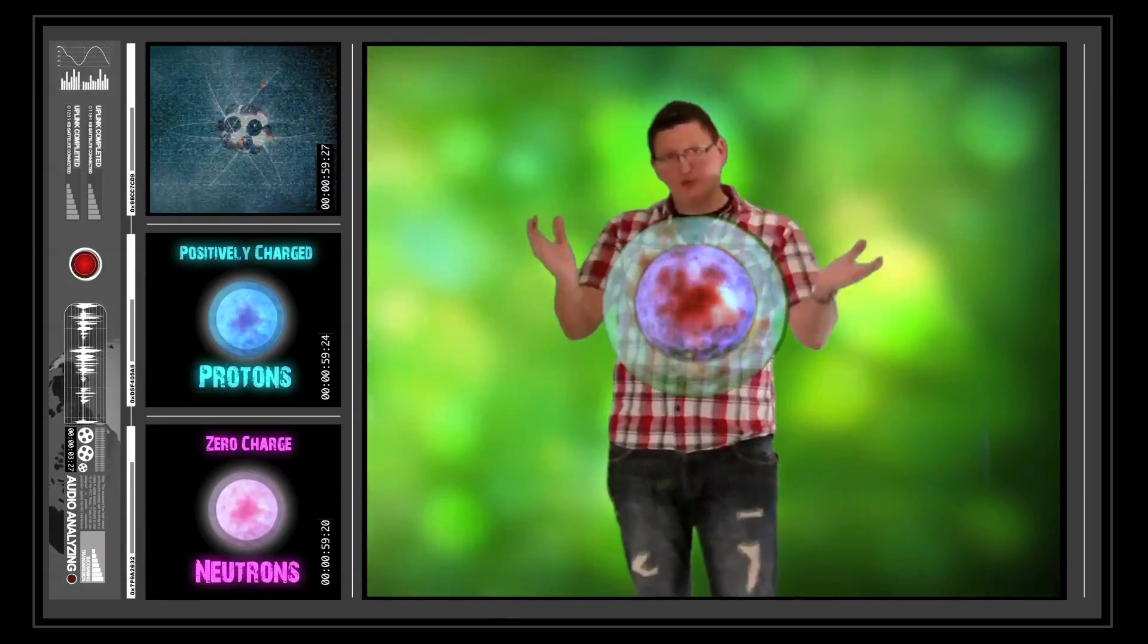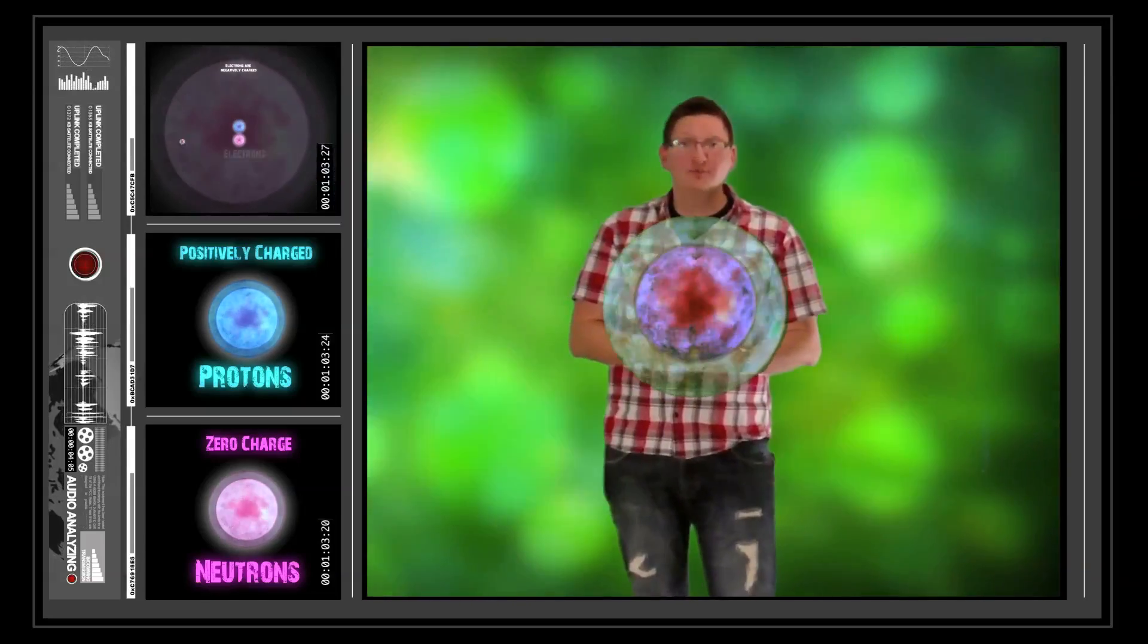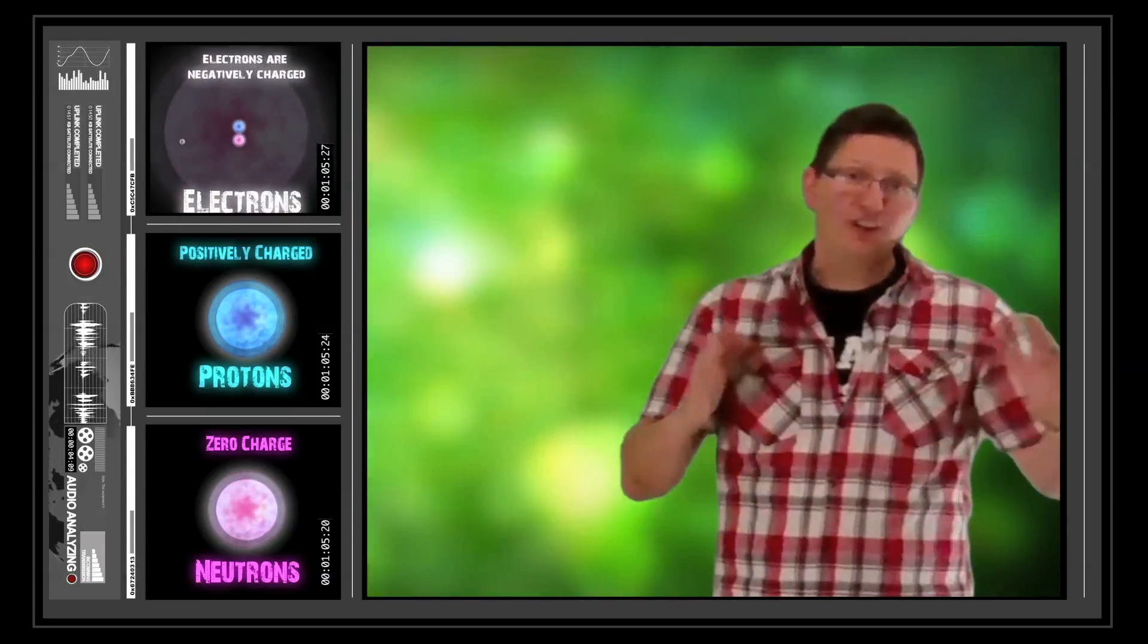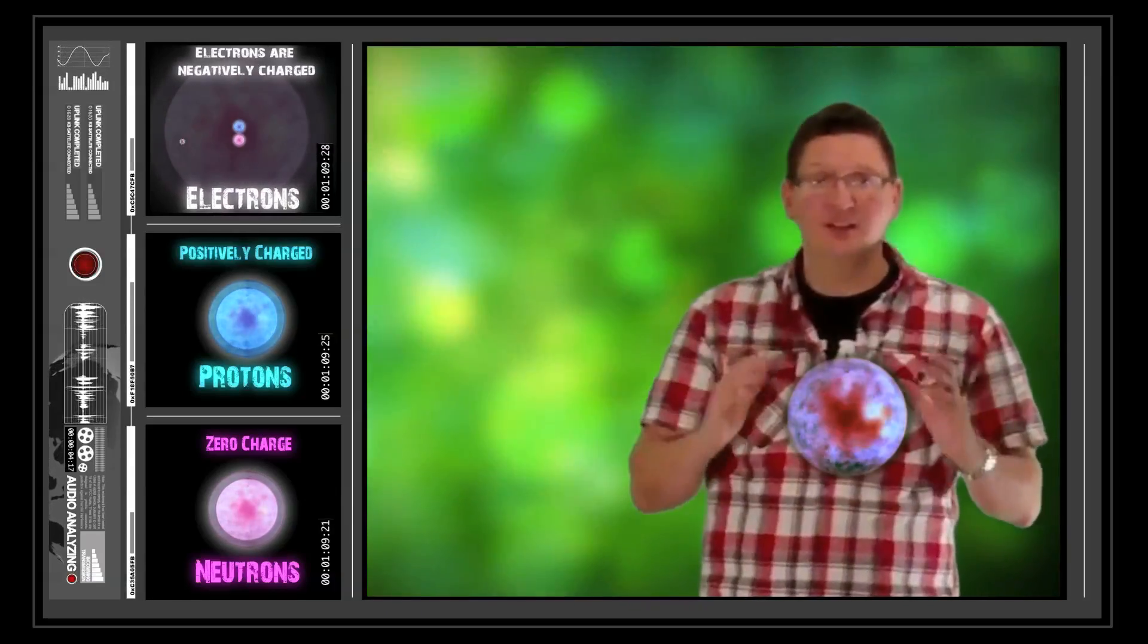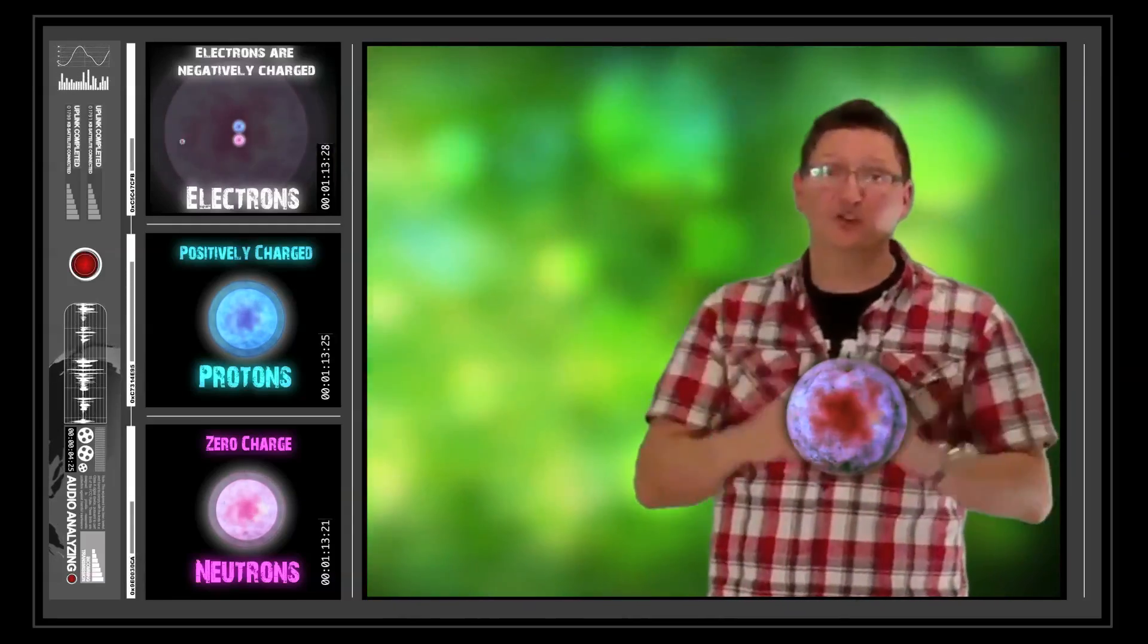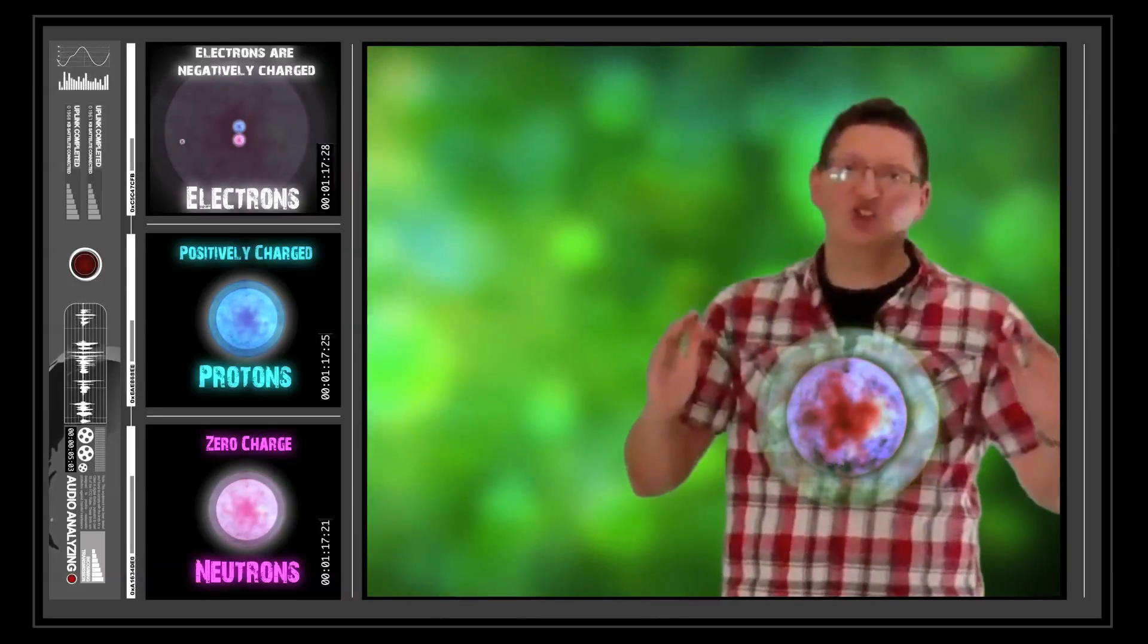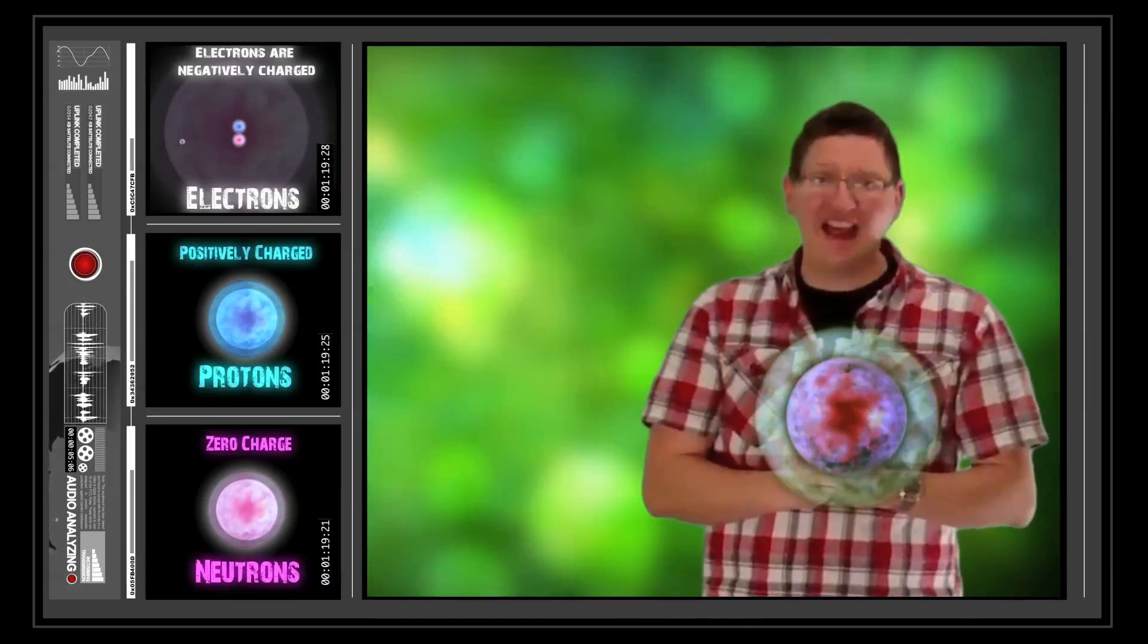Electrons orbit around the nucleus in what's called shells. Shells only allow certain amounts of electrons to be present within them. So in the first shell we have 2 electrons that can be occupied in that shell. In the second shell we can actually have 8 electrons.